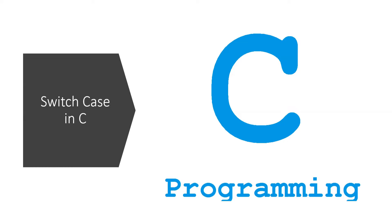In this video we'll try to see what is the switch case in C programming and how we use it. Switch is a unique syntax which can be used to check multiple instances of the same variable. For example, if you input a number and want to check whether it is 10, 20, 30, 40, or 50 — when the number of checks is large, you can use switch. Usage of switch case is always optional in C, not compulsory.